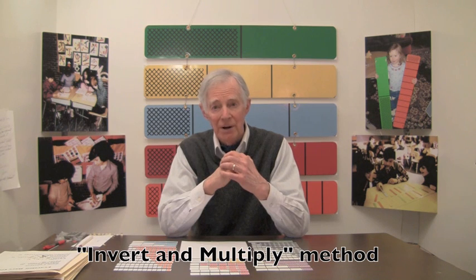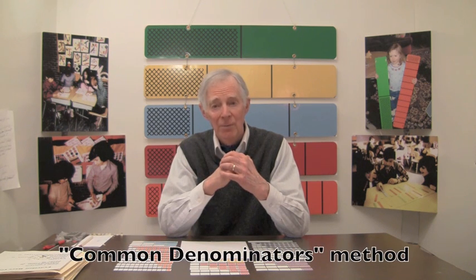Then we looked at two ways to divide one fraction by another. Either invert and multiply, or get common denominators for the two fractions, and divide one numerator by the other. According to Eugene Smith, in his history of mathematics, getting common denominators to divide one fraction by another was a method used to divide fractions many years before invert and multiply became popular.